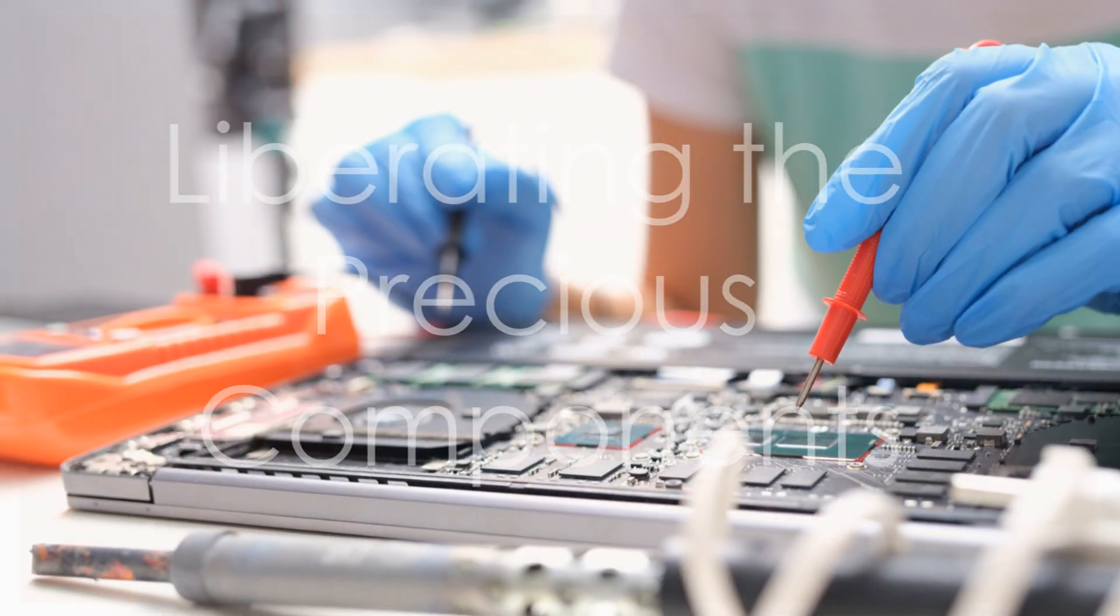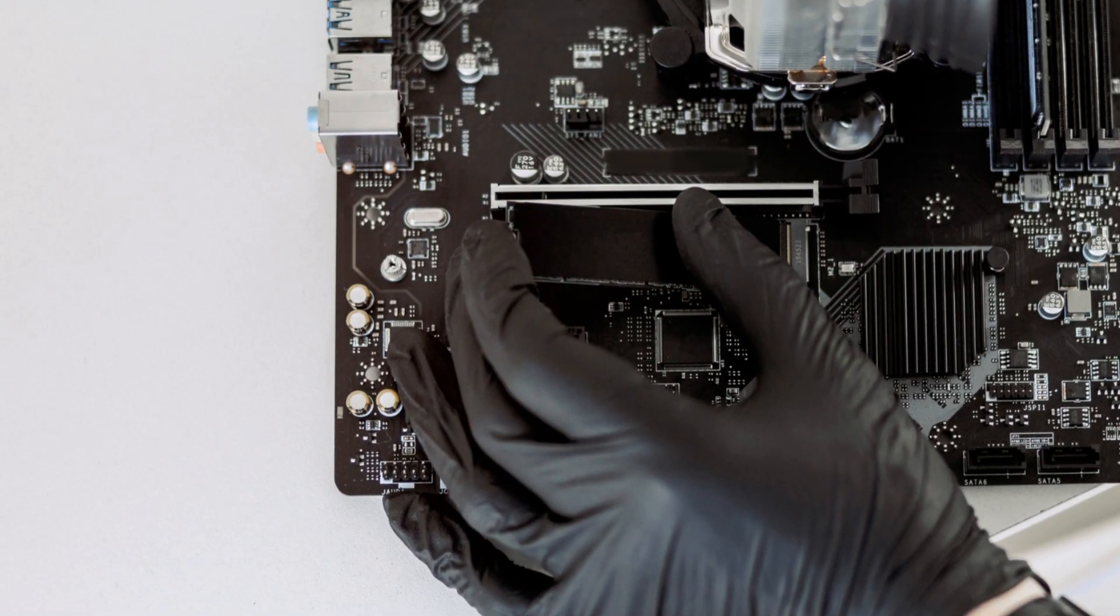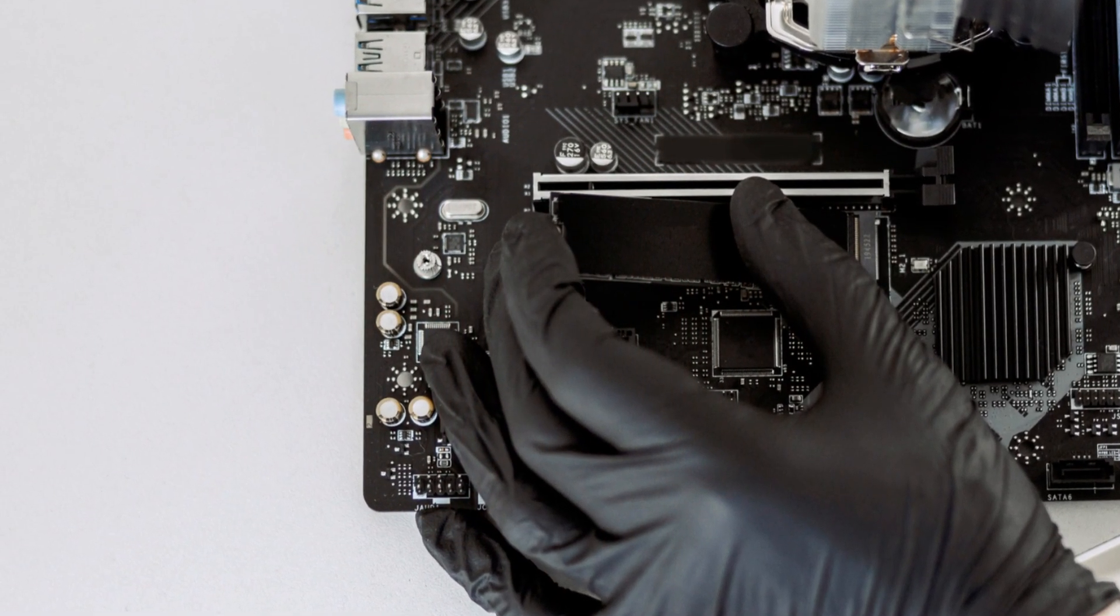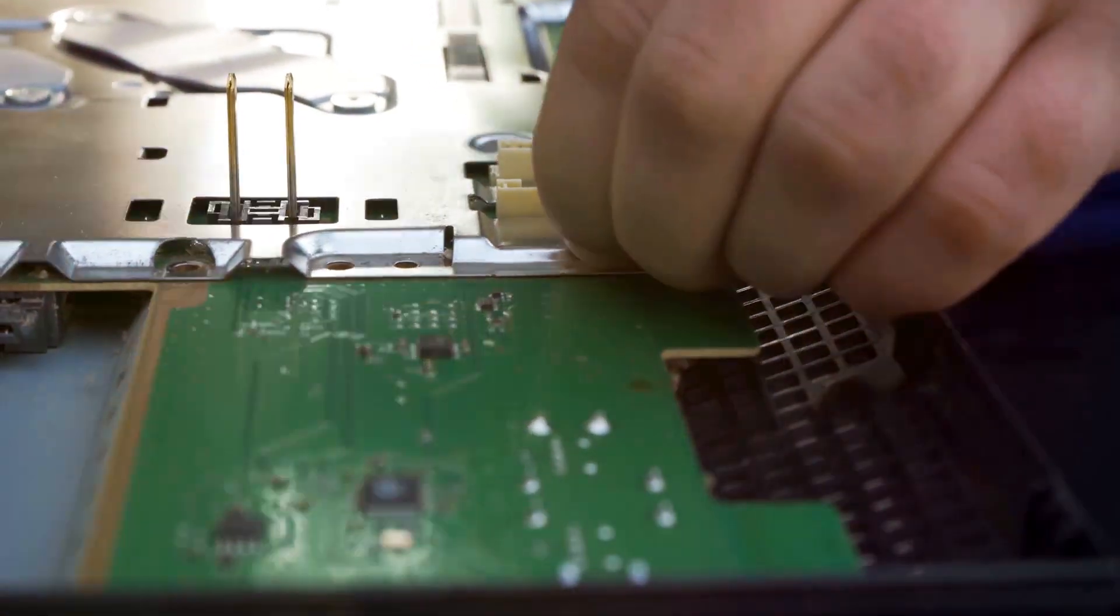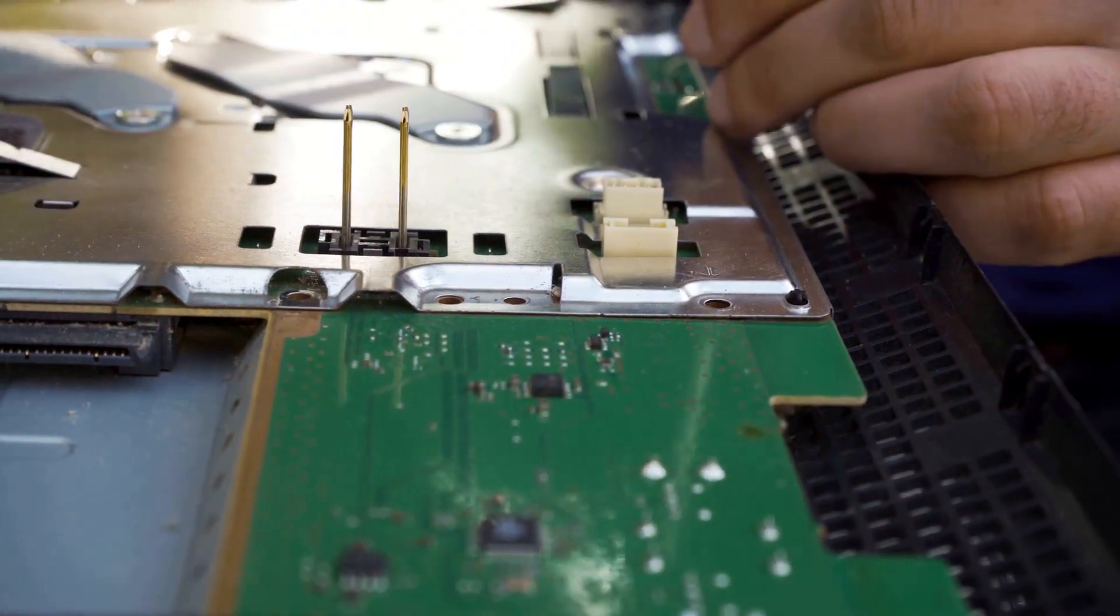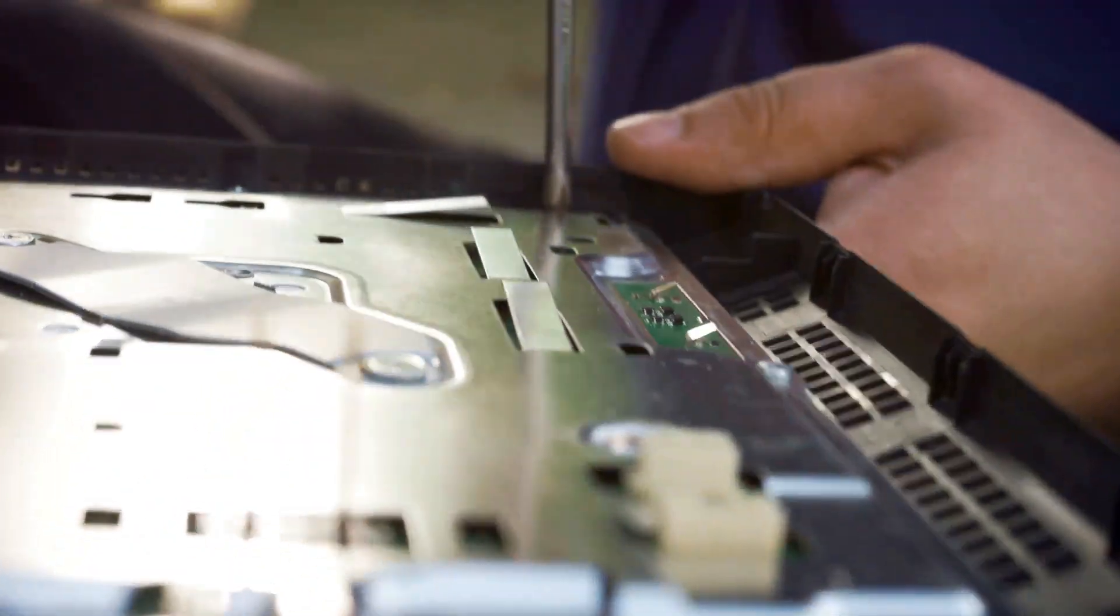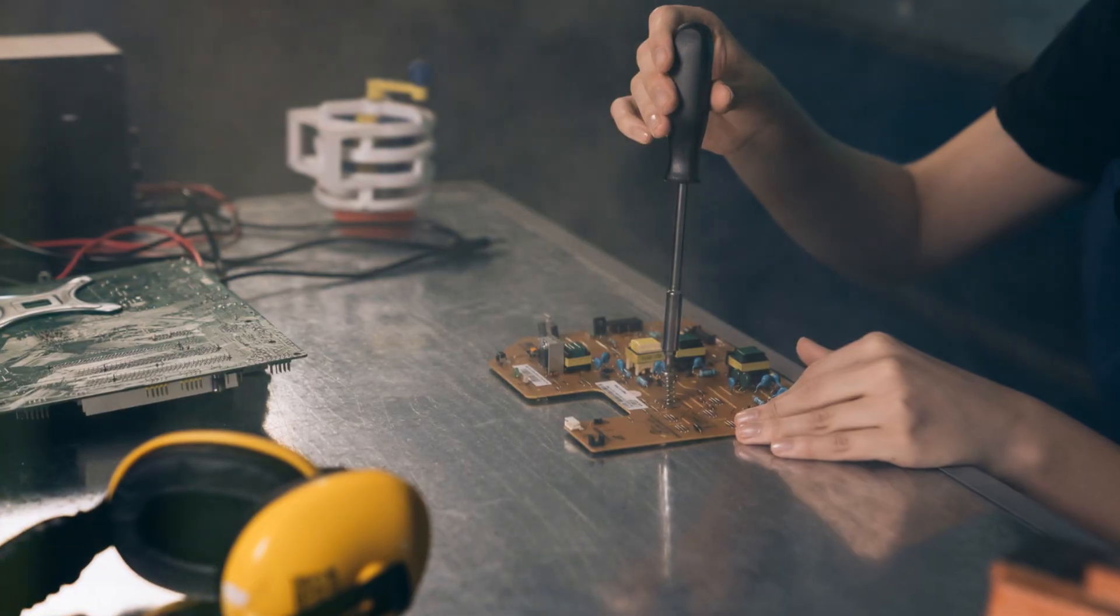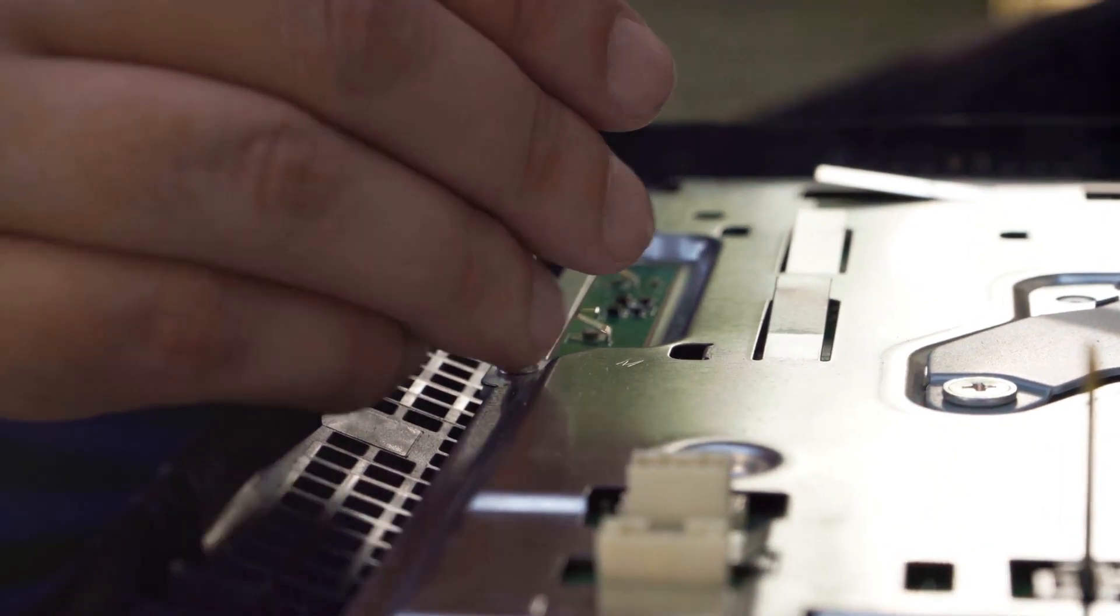Once we have all our tools and equipment ready, we can start disassembling those electronics and begin our gold recovery adventure. All right treasure hunters, let's get our hands dirty, with gloves on of course. The first step in our gold recovery process is to carefully dismantle our electronic devices and collect the gold-laden components. Start by removing any plastic casings, screws, or other parts that are not part of the circuit boards.